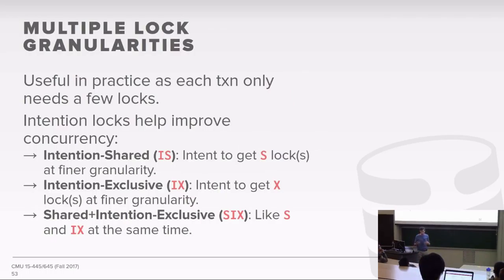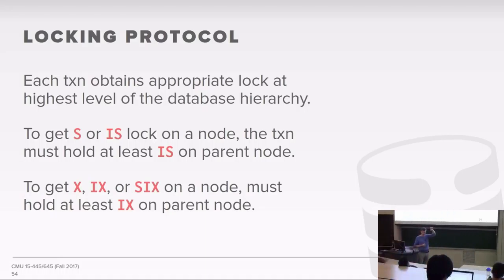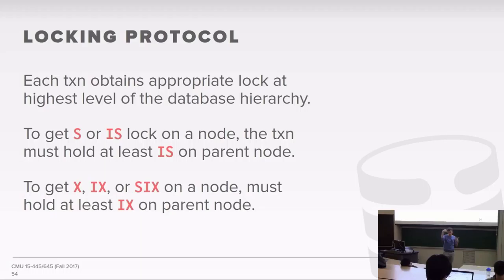A student asks whether this works with B+ trees. The answer is no—in B+ trees you don't actually have intention locks; you don't need them. The last transaction wants a shared lock to scan all tuples—that's the minimum number of locks needed. But it gets blocked because it's incompatible with the SIX lock. In practice we want to minimize the number of locks a transaction takes, which can increase parallelism and reduce invocations into the lock manager. Intention locks are the hints we use to figure out when we're allowed to do things.